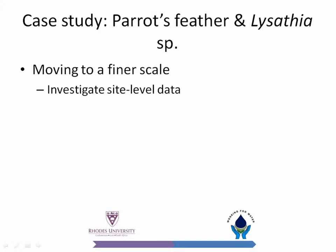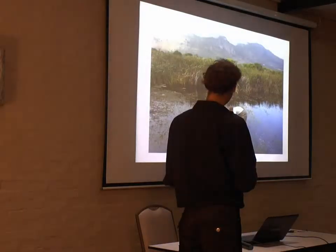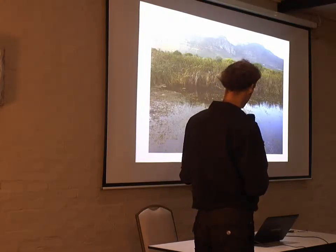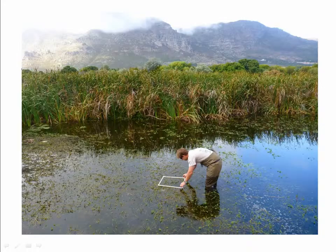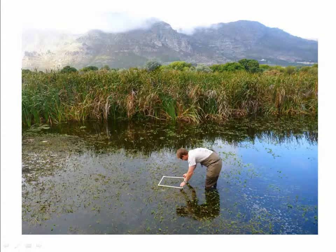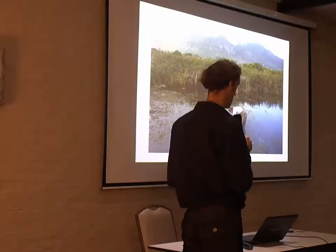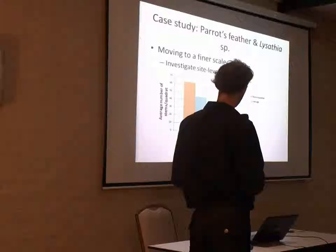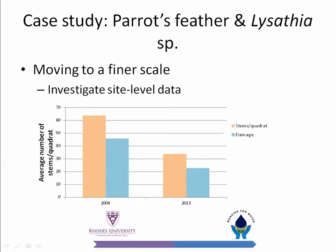Moving on to a finer scale, we can investigate site-level information. For parrot's feather, we do three random quadrants at the site. Within the quadrants, the number of stems are counted and the number of those stems showing evidence of feeding damage is recorded. From this we get a density estimate for the site and the damage caused by the control agent. When we compare 2008 to 2013, the pink represents stems per quadrant and the blue the proportion that are damaged. In 2008 there were just over 60 stems per quadrant, and this year that has pretty much been halved — so we can see how control agents are doing their job.